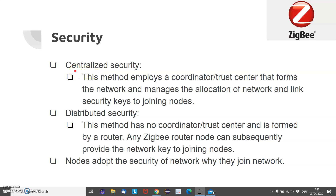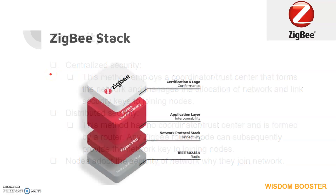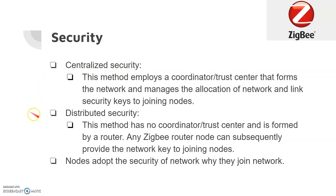There are two types of security in a ZigBee network: centralized security and distributed security. In centralized security, a coordinator manages all security and provides security keys to joining nodes. In distributed security, there is no coordinator — a router provides the key to joining nodes. In upcoming tutorials I will show how the key is exchanged and demonstrate sniffer logs.